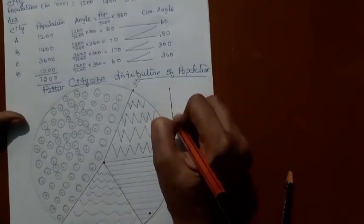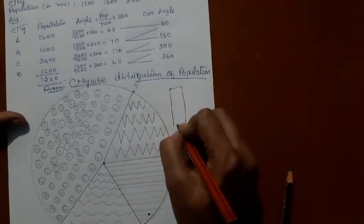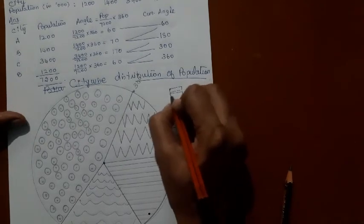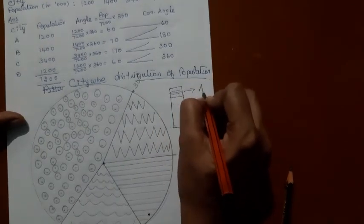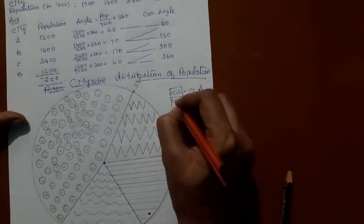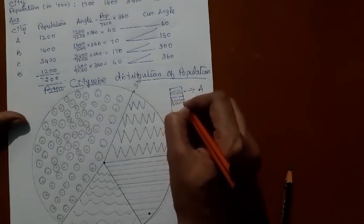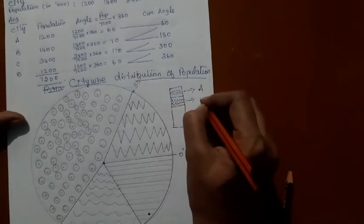Now let us explain the shades which we have used here. The horizontal lines represent the population in city A. The zigzag lines represent city B.